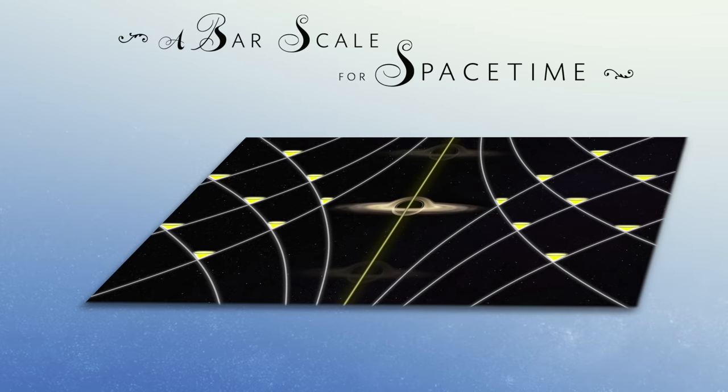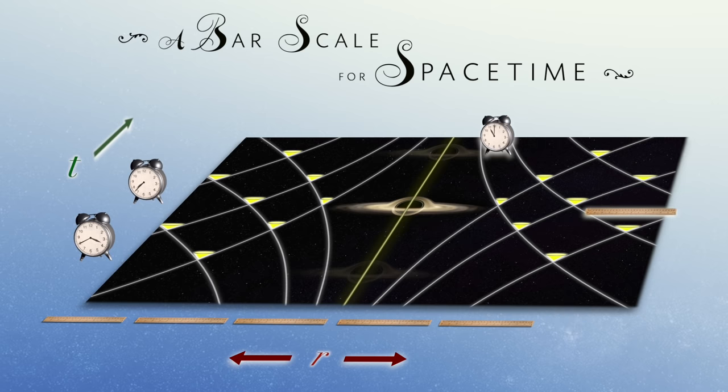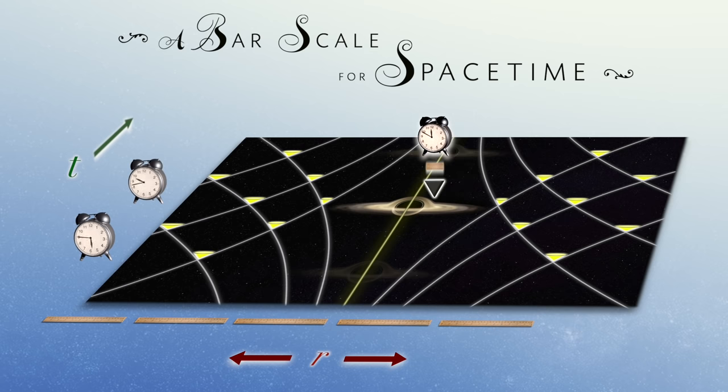In the case of our space-time map, it tells us how coordinate distances and coordinate times translate to proper distances and proper times across different locations of our map.